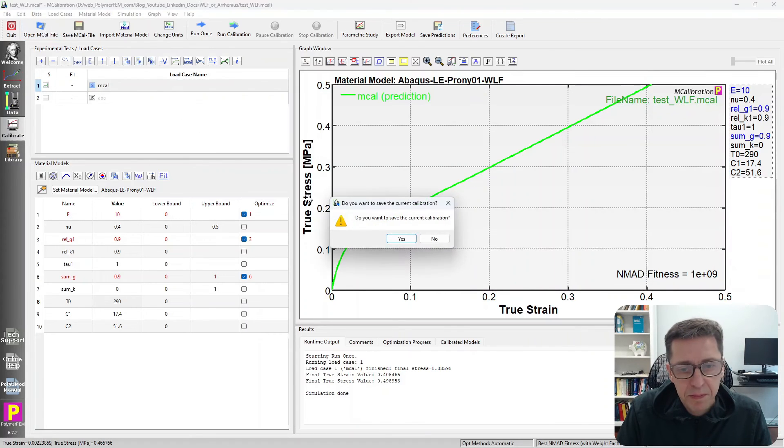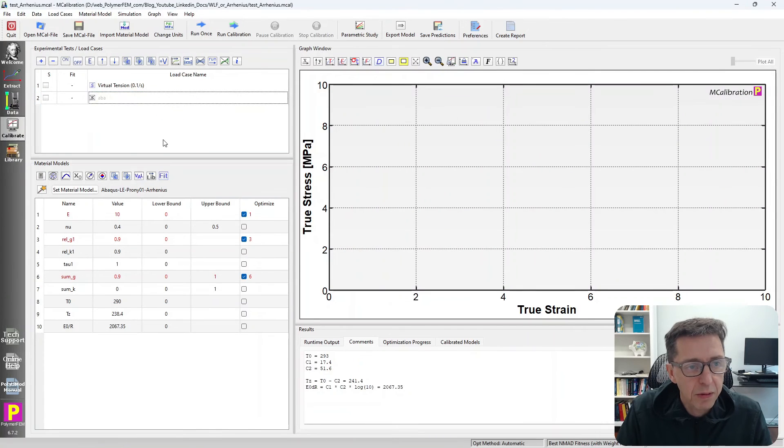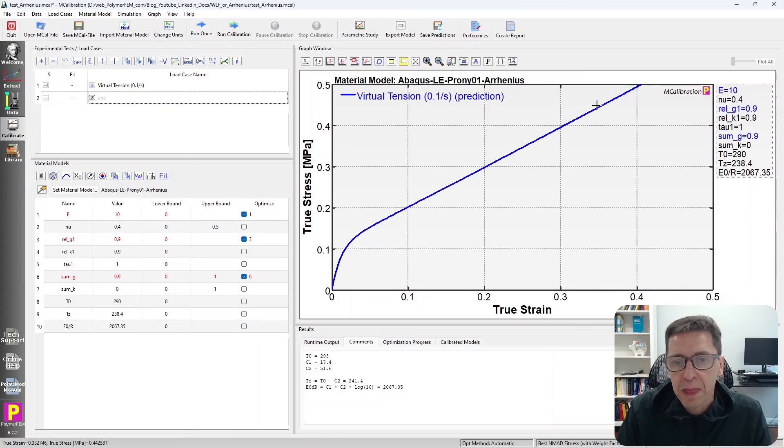I have another example where I use the Arrhenius type equation. In this case, I converted the parameters according to the equations that I showed earlier to try to make them equivalent. This time I specified Arrhenius, and when I run this, I get exactly the same stress-strain curve in this case. Just to illustrate again that the Arrhenius model can be made to be exactly the same as the WLF.